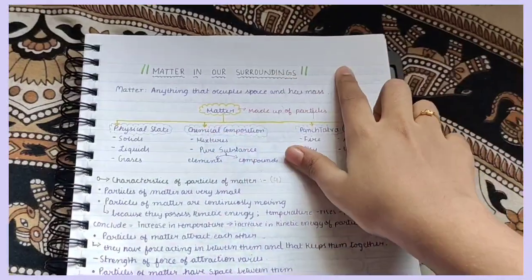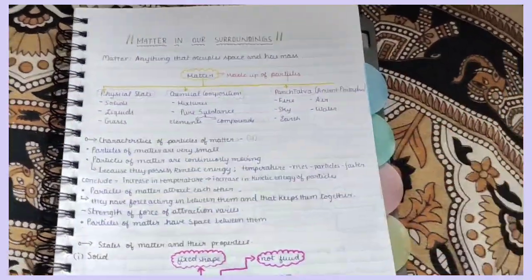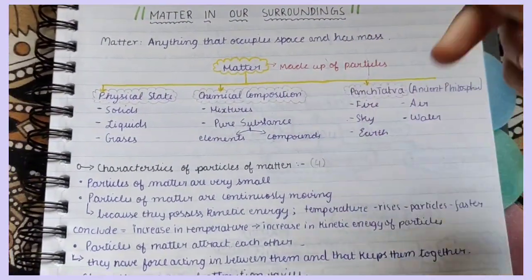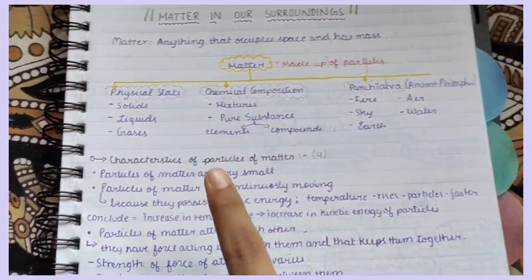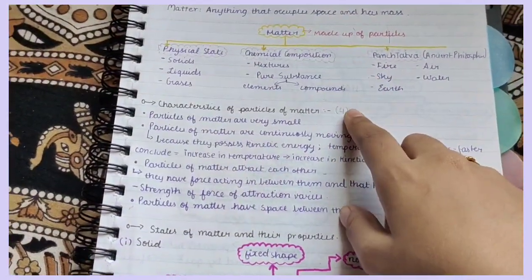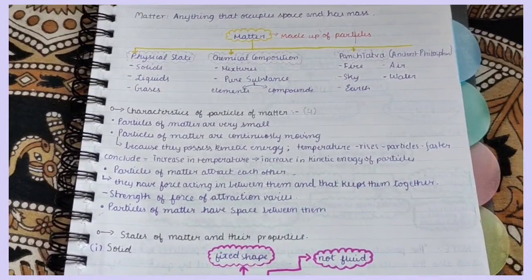So here I've started the heading and I've highlighted it in black. Then I've written the definition and I have also made a flowchart of classification of matter. Here I have also written about what matter is made up of, and that is continued here in characteristics of particles of matter. So here I've written the number four. That means there are four points that I have to remember when I'm writing in the exam.